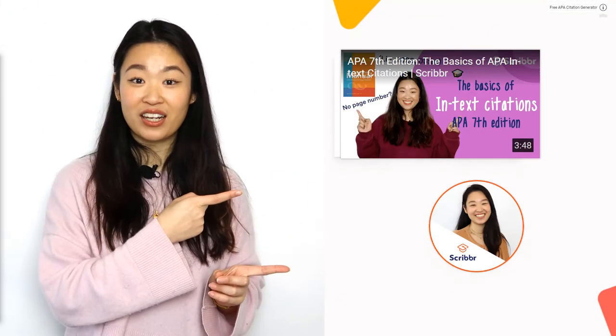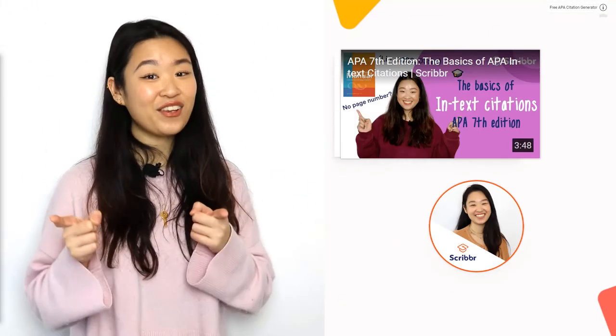Now, no matter which kind of sources you've used, make sure to cite correctly. It's super easy with Scriber Citation Generator. If you're not sure how to do in-text citations, check out this video here. I'll see you there!